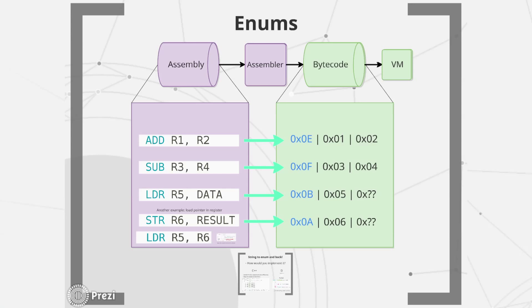One of the features most notable when I did this initial port were enum values. If I were to make a flow diagram of what I had in the first semester: we have our assembly file, we put that into our assembler, the assembler puts out byte code, and we use that to execute in our virtual machine.